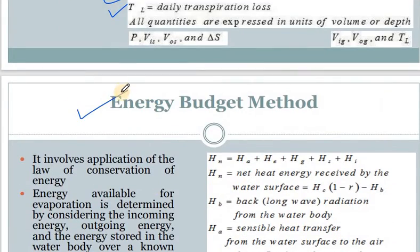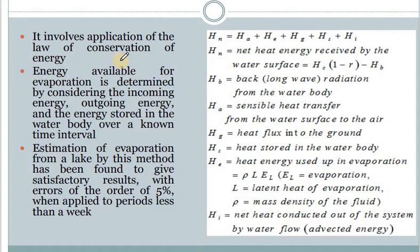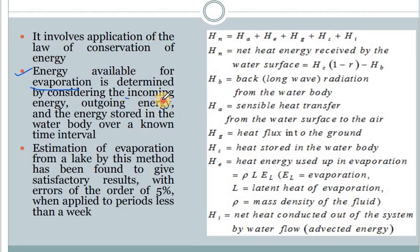After that there is the energy budget method. It basically involves the law of conservation of energy. Energy available for evaporation is determined by considering the incoming energy, outgoing energy, and the energy stored in the water body over a known period of time. These three factors are very important to calculate evaporation — we need to find out the incoming energy, the outgoing energy, and the energy stored in the water body at various time intervals.